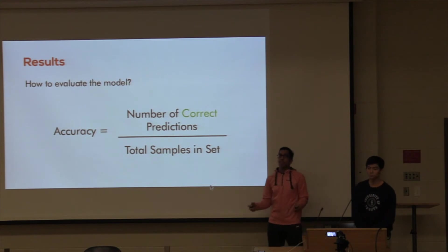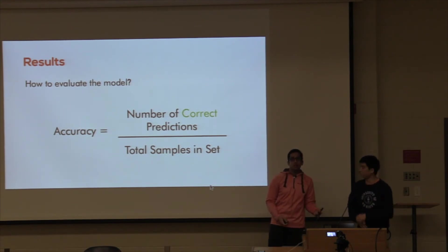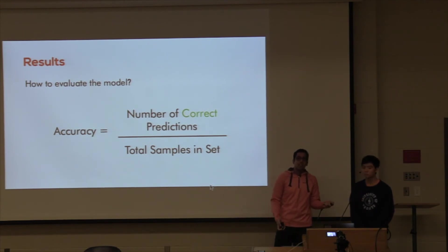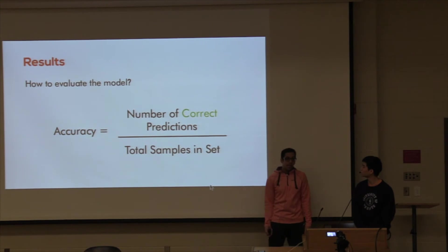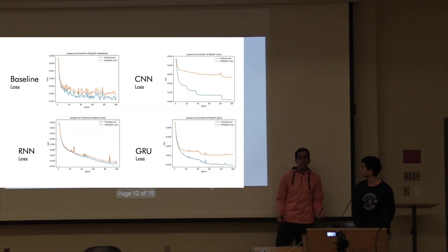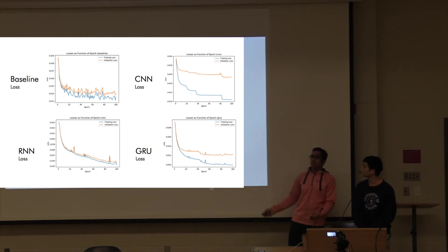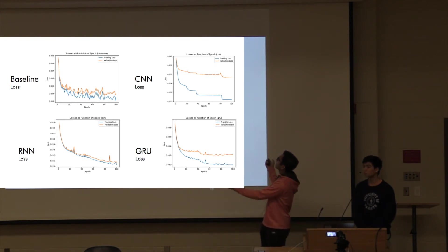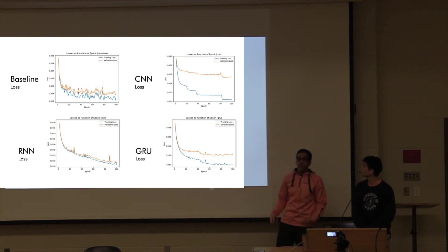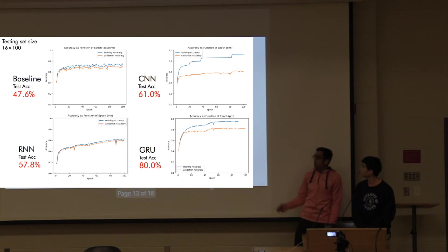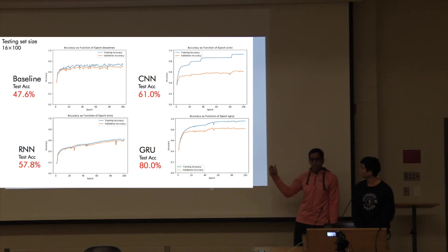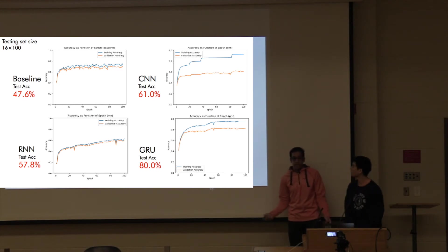Talking about results: since we have a multi-class classifier with 16 subreddits, metrics like precision and recall would require over 100 pairwise comparisons, so we're going by accuracy. To remove bias, we ensured an equal number of samples from each class. The baseline achieved around 47% test accuracy. The CNN got up to 61% but is clearly overfitting. The RNN was 57%, and the GRU was our best model at 80% — and since then it's improved to 85% and is still improving.